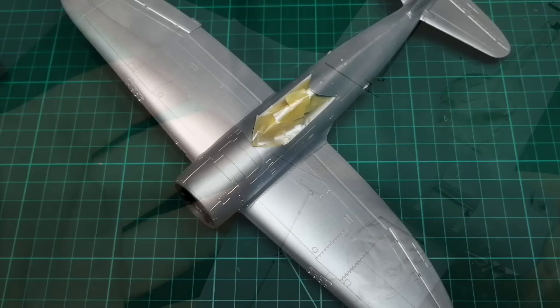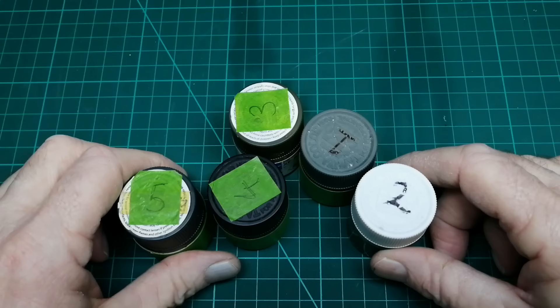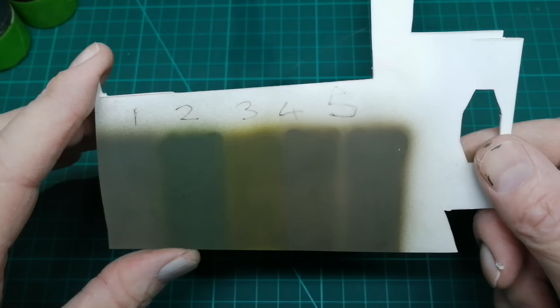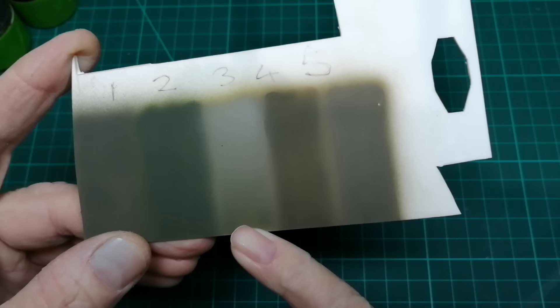Now for the olive drab I have quite a few custom greens already mixed. So I decided to apply these on a bit of plastic just to see what they look like when dried and see if I can use any of them. Ended up picking number three, mixed with a small amount of these three colours, just to give me that sun faded green.